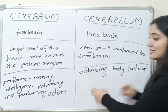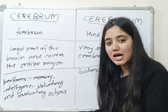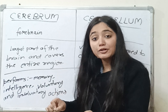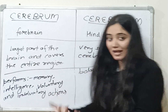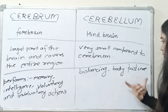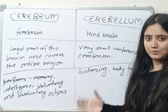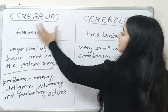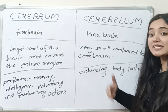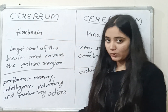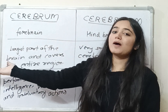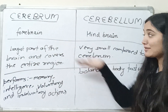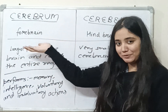Cerebellum means balancing — like riding a cycle, activa, holding a pen — and body posture. These are all its functions. The difference is: Cerebrum is the largest part of the brain, and Cerebellum is very small as compared to Cerebrum.